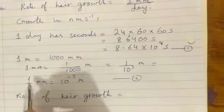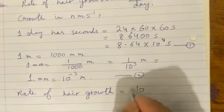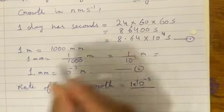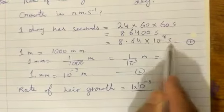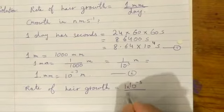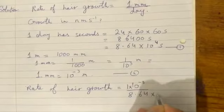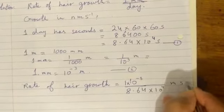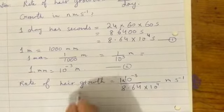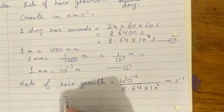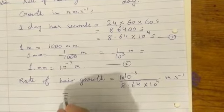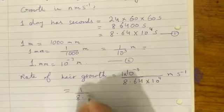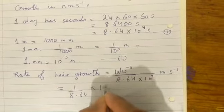We substitute the values. One millimeter equals ten to the power minus three meters, divided by 8.64 times ten to the power four seconds, which gives us meters per second.